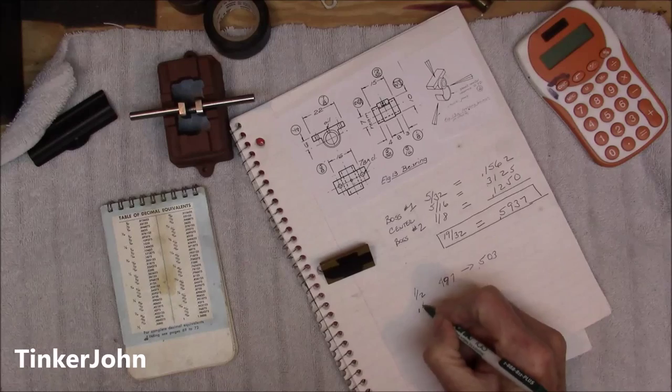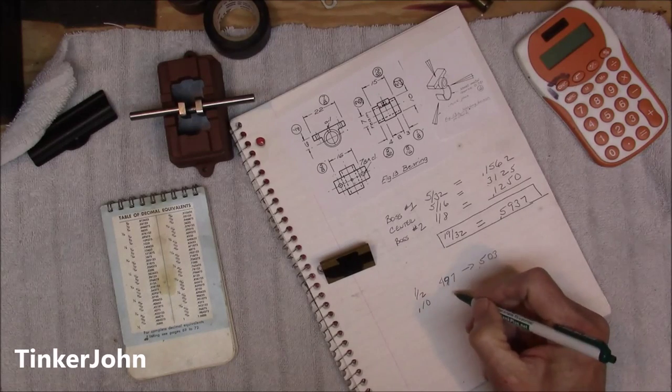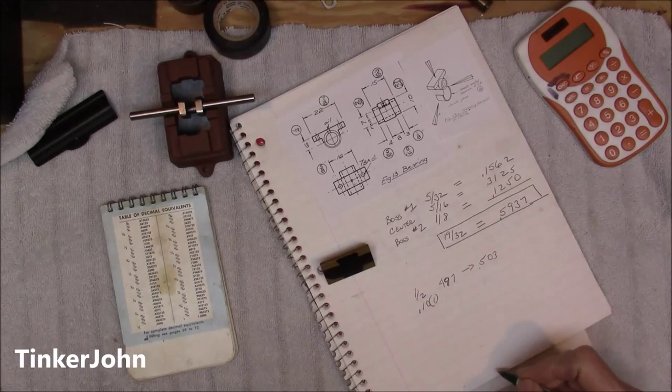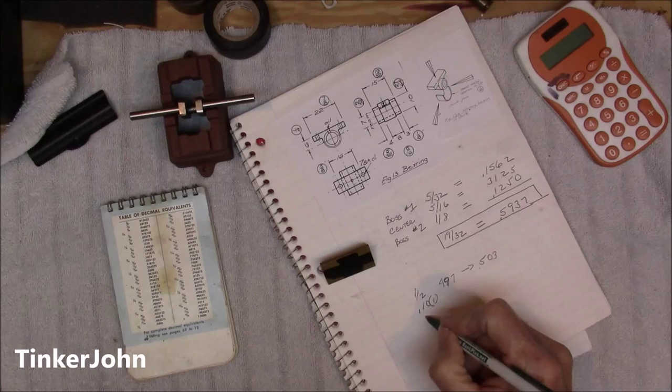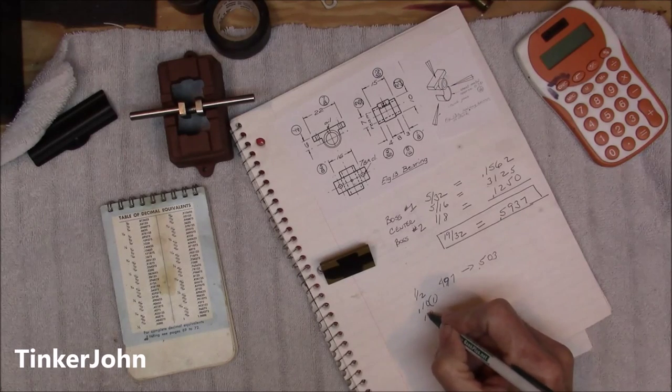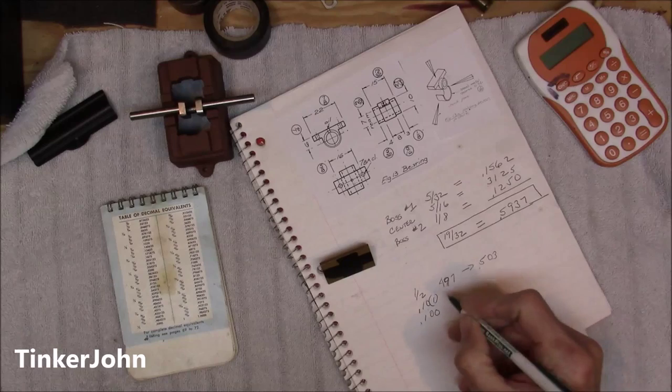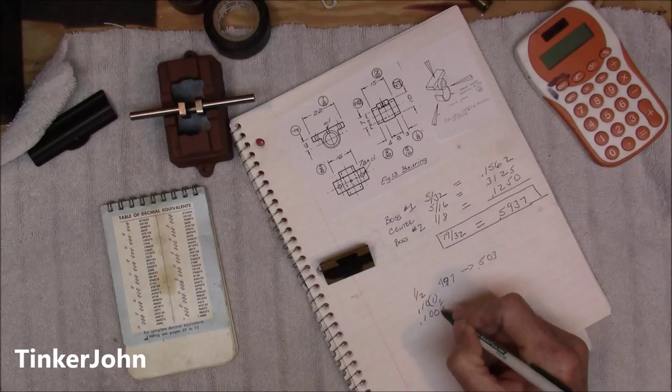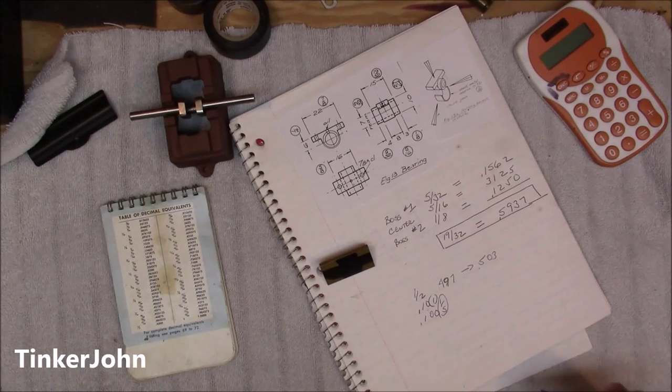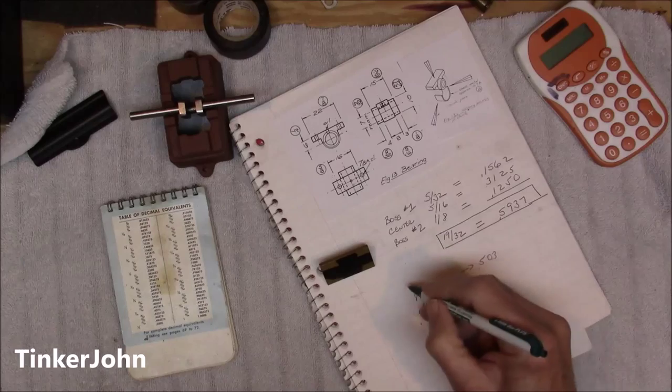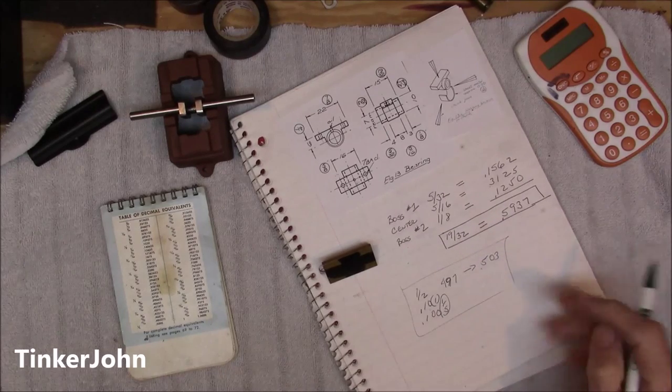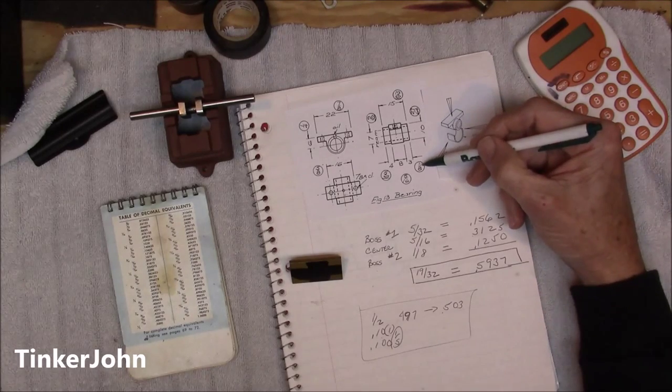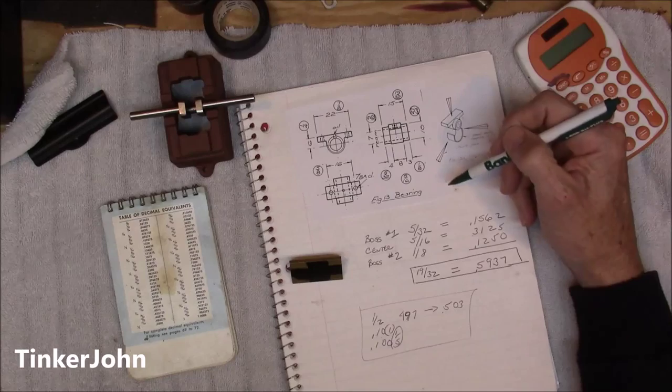You might see a set of plans that has that on there, or a tenth. Usually what you'll do is make it to the next number closest to a thousandth. If you see something that has thousandths on it, for example a hundred thousandths, then in that case you would want to get that into a half thousandths of dimensions. Now that's whenever you're machining for total accuracy. Again, we're building a steam engine here, so we're just going to follow the suggestions on the plans, and we do have a little bit of leeway.